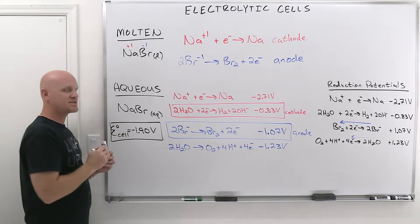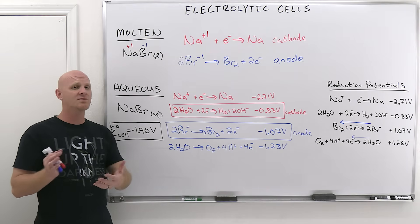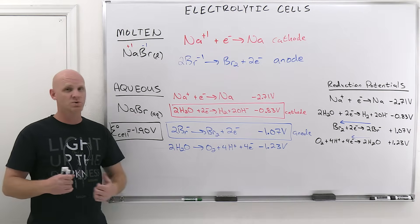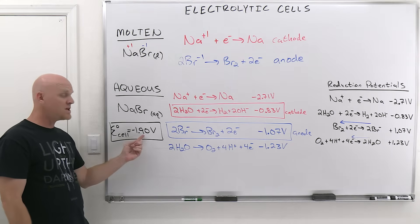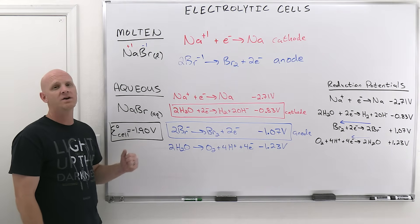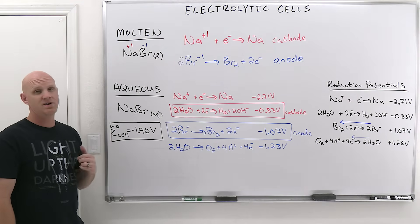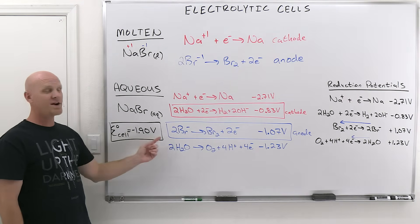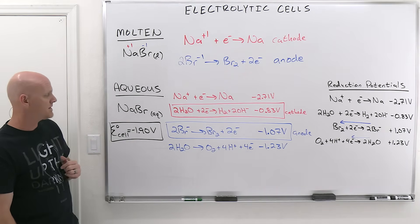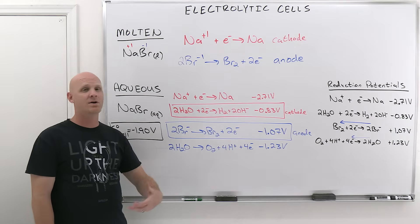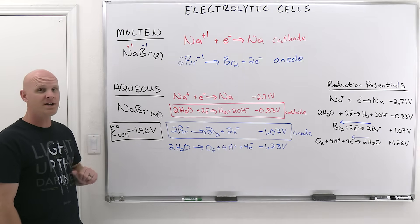That is a non-spontaneous reaction. We talked about electrolysis when we discussed galvanic cells — we need a power source. What this means is your power source has to supply a minimum of 1.90 volts for this reaction to occur. The reaction is non-spontaneous by negative 1.90 volts, and your power source has to overcome this — minimum positive 1.90 volts, whether that's a battery or plugged into a wall.